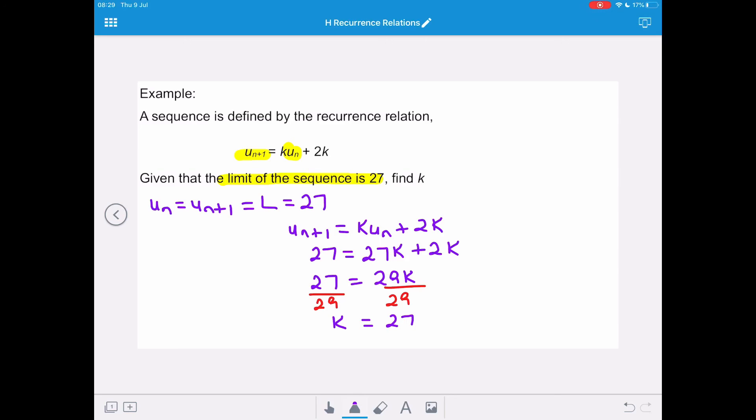And we can always check to make sure that our answer makes sense, because if there's a limit, then k would have to lie between negative 1 and 1, which it does. So our final recurrence relation is un+1 equals 27 over 29 un plus 54 over 29. And it's best to leave these values as fractions for accuracy.